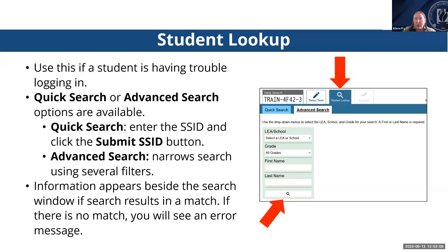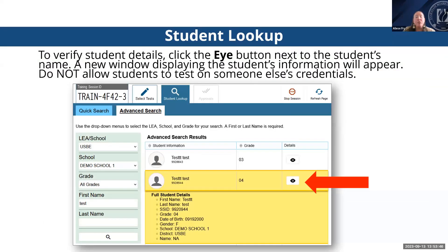The student lookup tab is helpful if a student is having trouble logging in, so you can verify that login credentials are correct. You can use either quick search, where you simply enter the SSID and click Submit, or advanced search, using several filters like district, school, grade, first name, and last name. If there's a match, information appears at the bottom of the window; if there's no match, you'll see an error message. If you find the student, click the eye icon next to the student name to display a new window with the student's information.